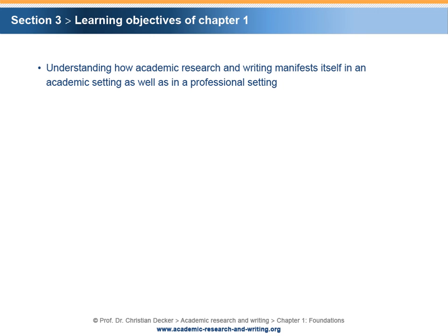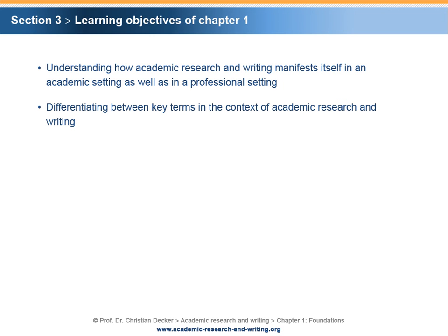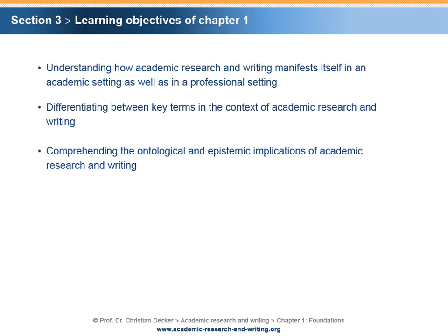Furthermore, you should be able to differentiate between key terms in the context of academic research and writing. Additionally, you should comprehend the ontological and epistemic implications of academic research and writing. Finally, you should acquaint yourself with the course structure and the corresponding syllabus.